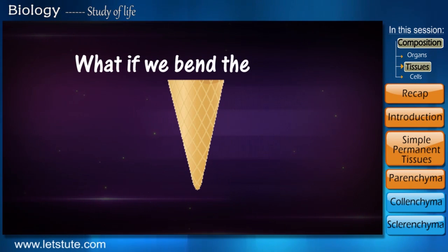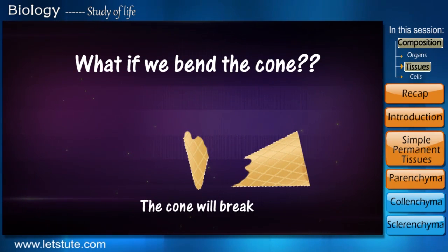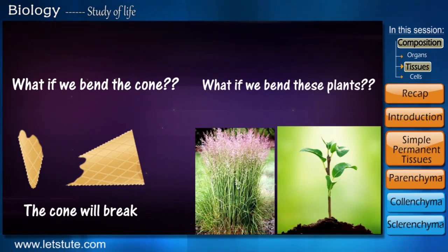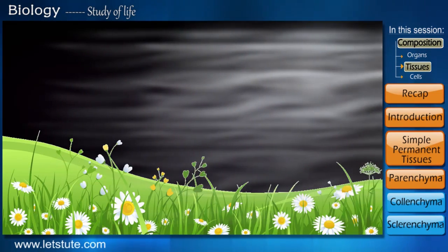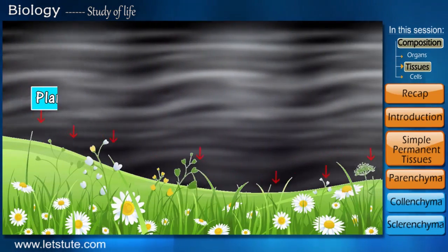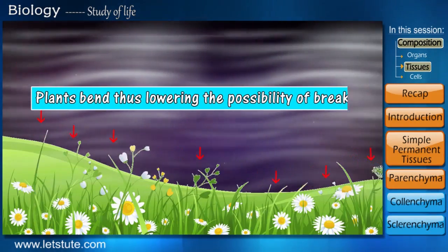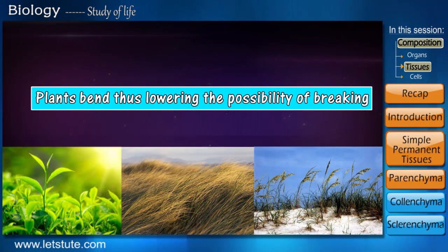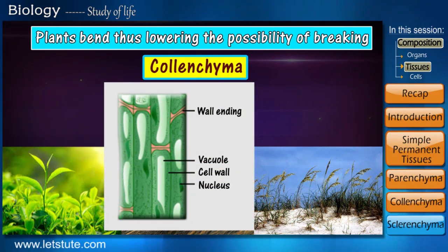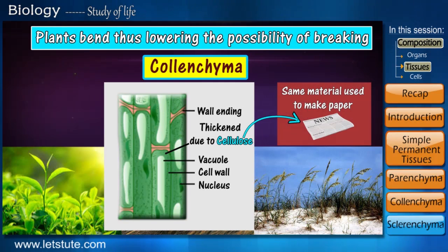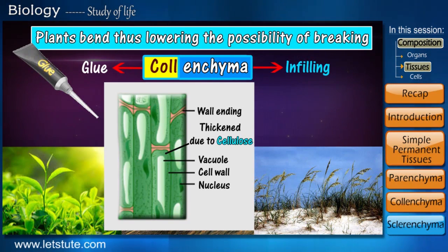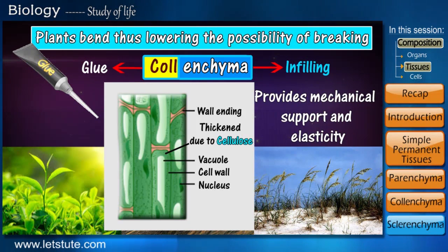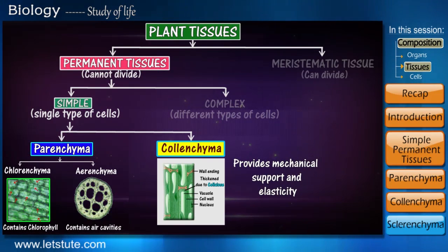If we try to bend an ice cream cone it would break, but compare this to young plants such as grasses — during a strong wind they tend to bend, lowering the possibility of breaking. This important flexibility is possible due to another type of simple permanent tissue called colenchyma. The cells that form this tissue are elongated and thickened at the corners due to extra deposition of cellulose, which acts as a glue to hold cells together and provides mechanical support as well as elasticity to young parts of the plant such as the leaf and stem.